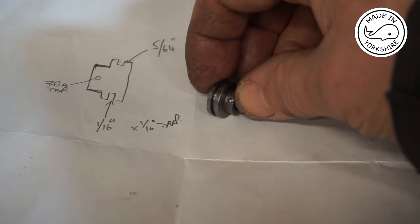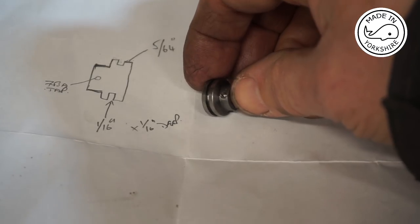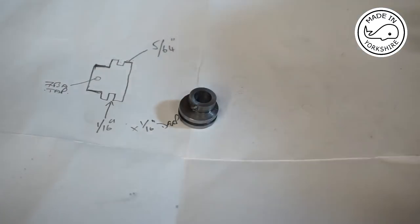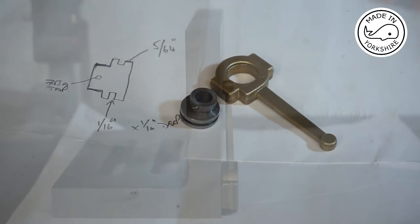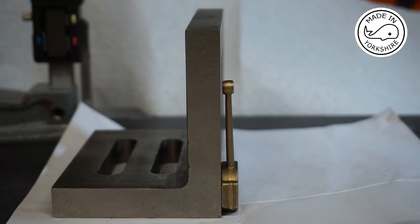So that's the sheave finished. Now it's time to get on and machine the strap. This strap is shaped like a banana so I need to give it a little bit of thought before I start any work on this.